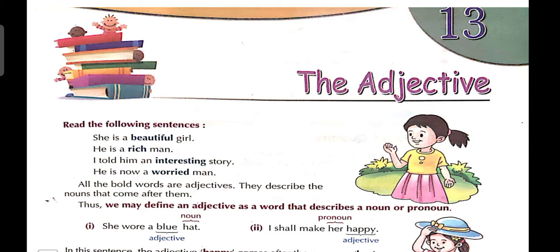Now moving to what is given in your book, the adjectives chapter 13. Read the following sentences: She is a beautiful girl. कैसी girl है? Beautiful girl है, so यहाँ पे noun की quality के बारे में बताया जा रहा है। He is a rich man. Man क्या है? Rich है. So here you are able to see the quality of a noun. I told him an interesting story. Interesting is an adjective. He is now a worried man. Worried is an adjective.